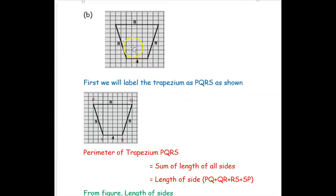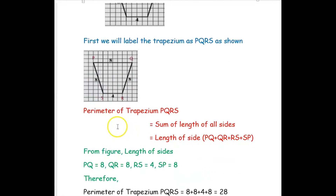Now we will go to the second given trapezium. Before finding perimeter and area, we label its vertices as P, Q, R, S. The perimeter of trapezium PQRS is the sum of all sides: PQ plus QR plus RS plus SP. From the figure, PQ is 8, QR is 8, RS is 4, and SP is 8.